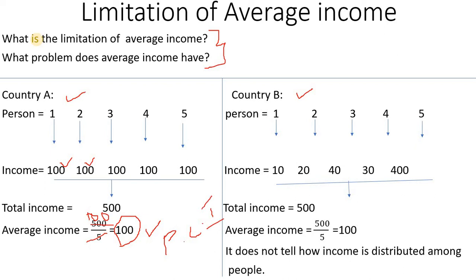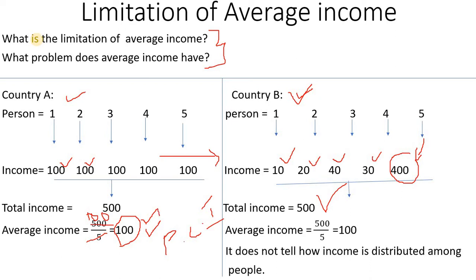Now let's look at Country B. In Country B, one person has 50 rupees, another has 200 rupees, another has 200 rupees, another has 50 rupees, and another has 50 rupees. If you calculate the average, the total divided by the number of people is still 100 rupees. So the average income is also 100 rupees.